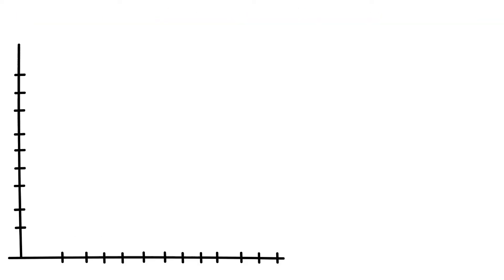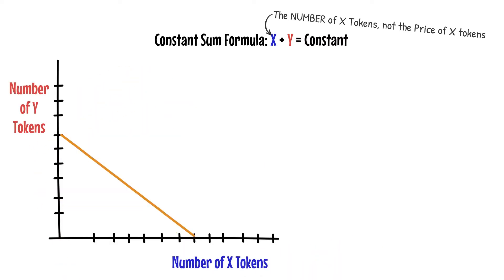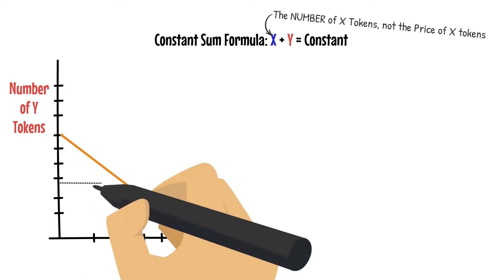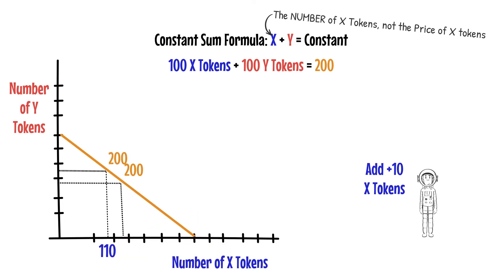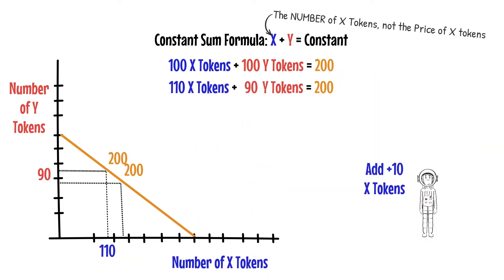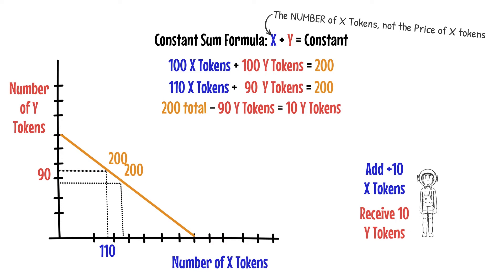Let's take a closer look at the constant sum curve. Bonding curves can be used to figure out the exchange rate between the tokens in the pool at any given time. The formula for the constant sum bonding curve is x plus y equals constant. That means for any exchange happening in the pool, the end sum of tokens has to remain constant. For example, if the pool has 100 x tokens and 100 y tokens and you add 10 x tokens, plugging in 110 tells us you get 10 y tokens back — a one-to-one trade.